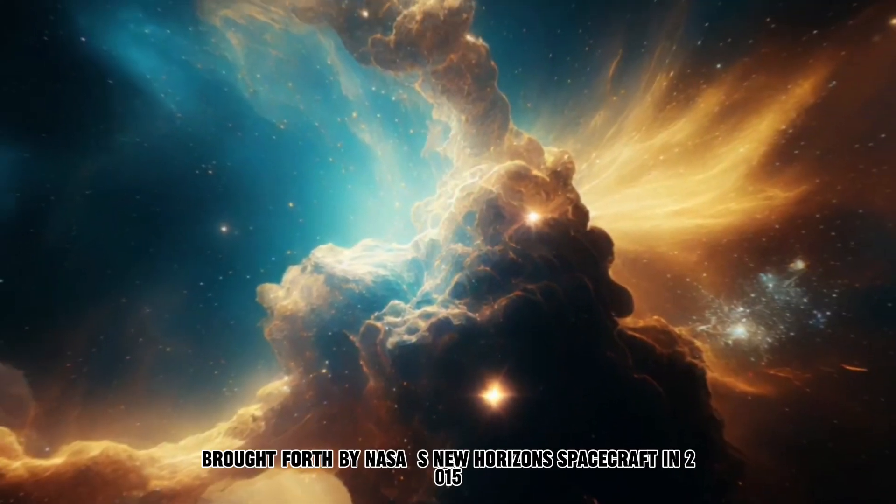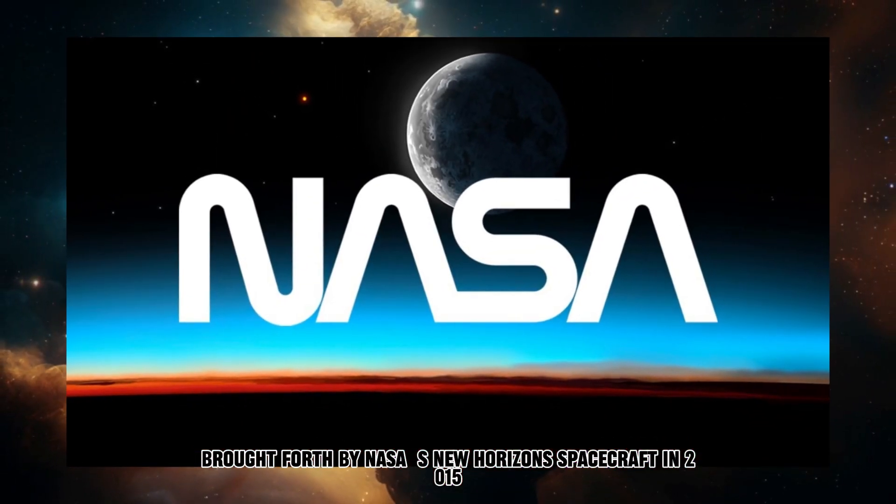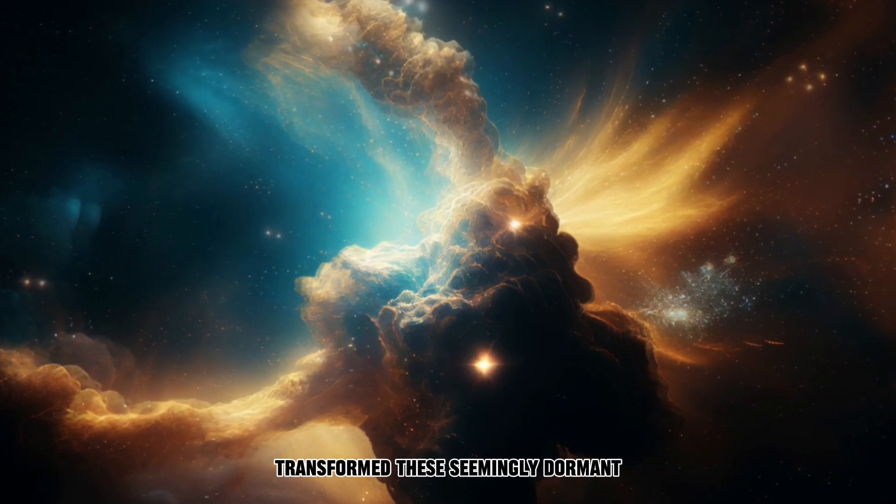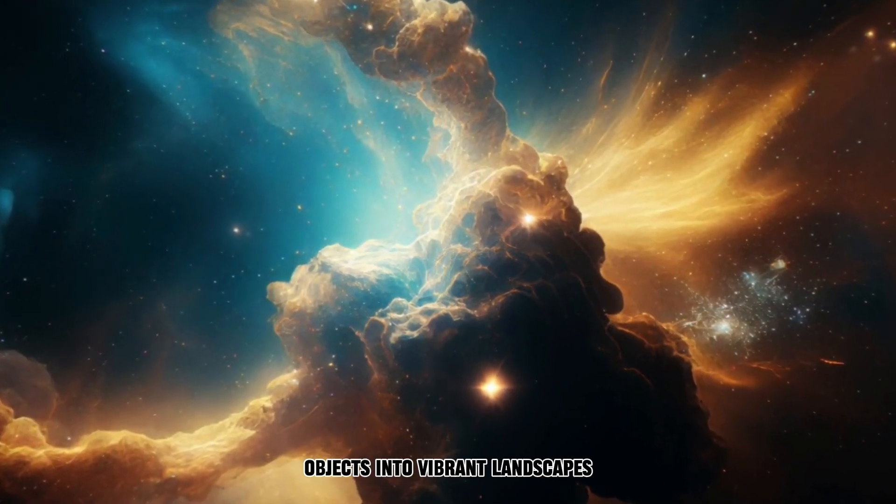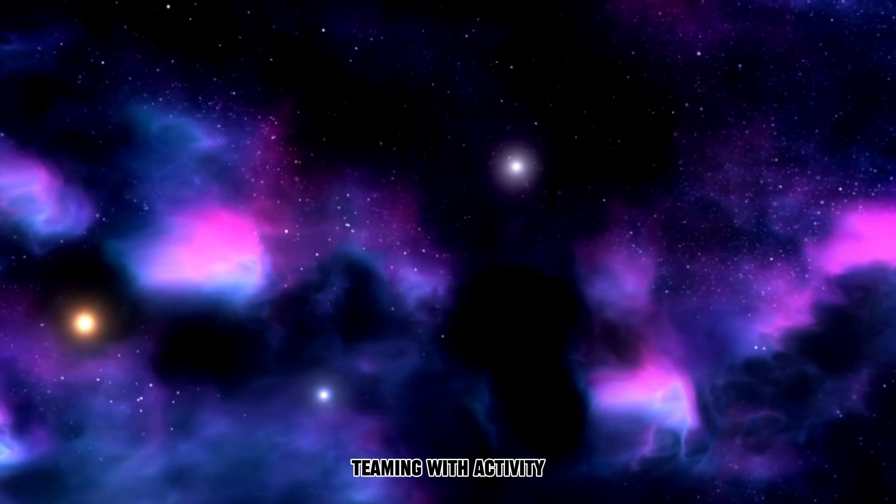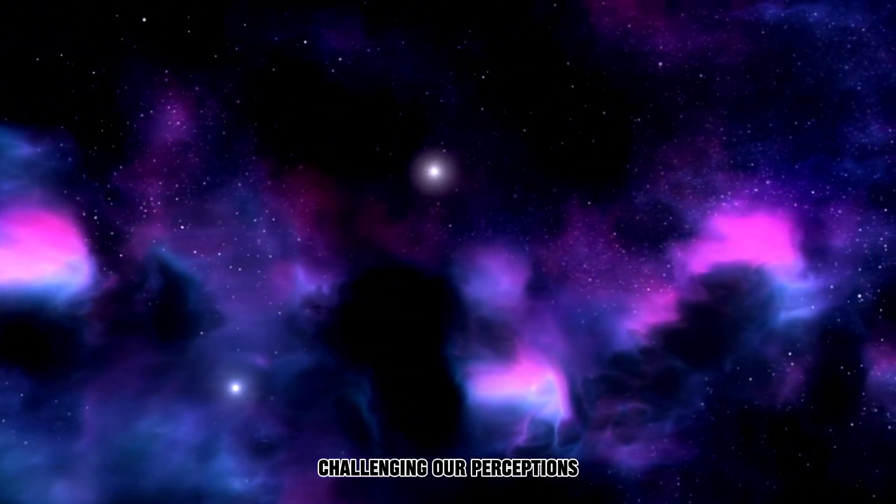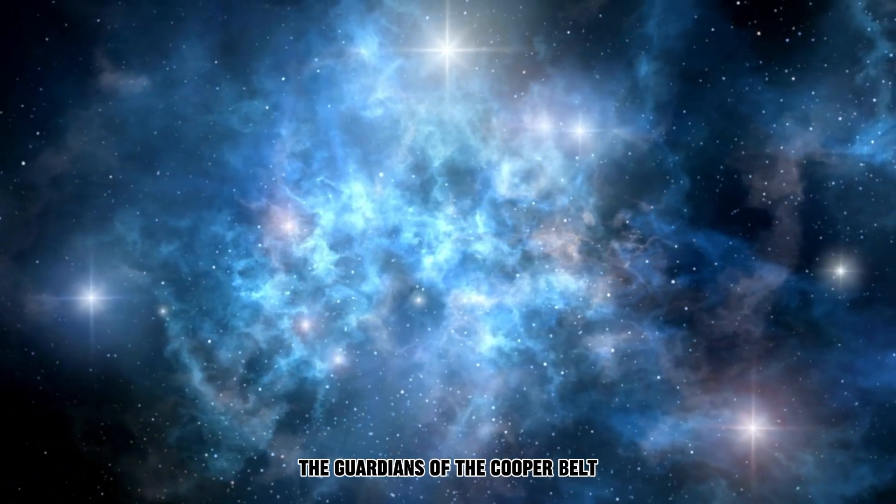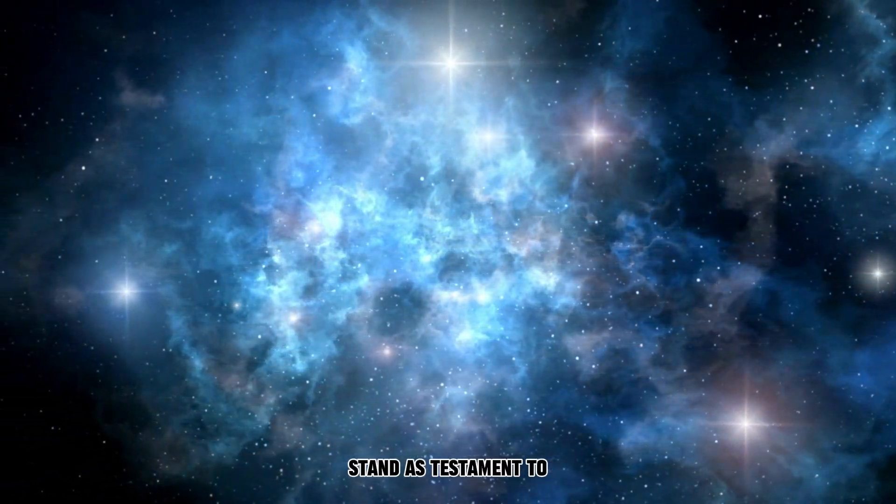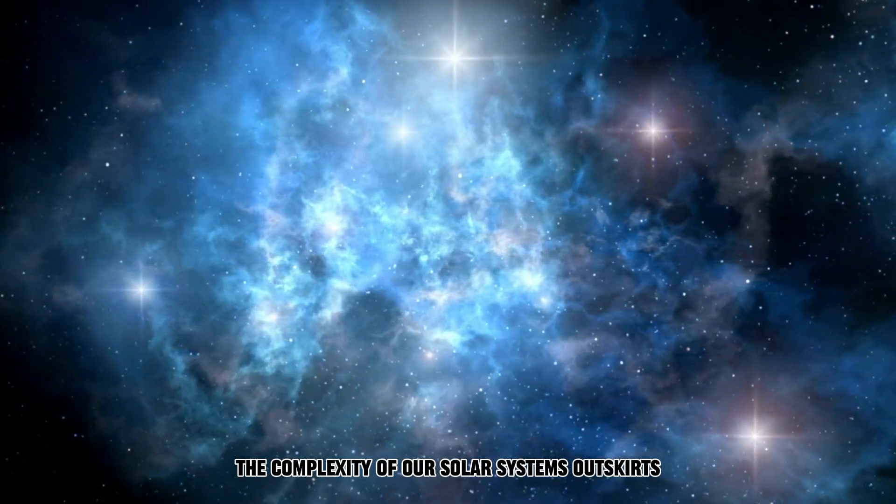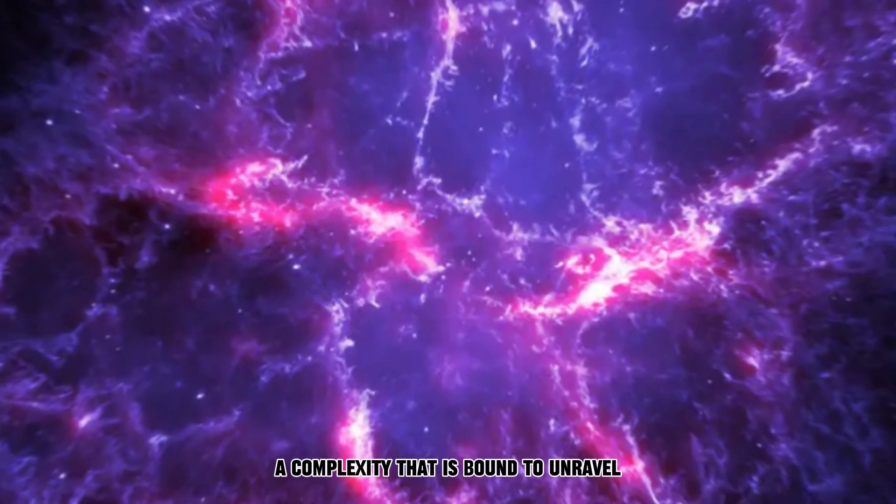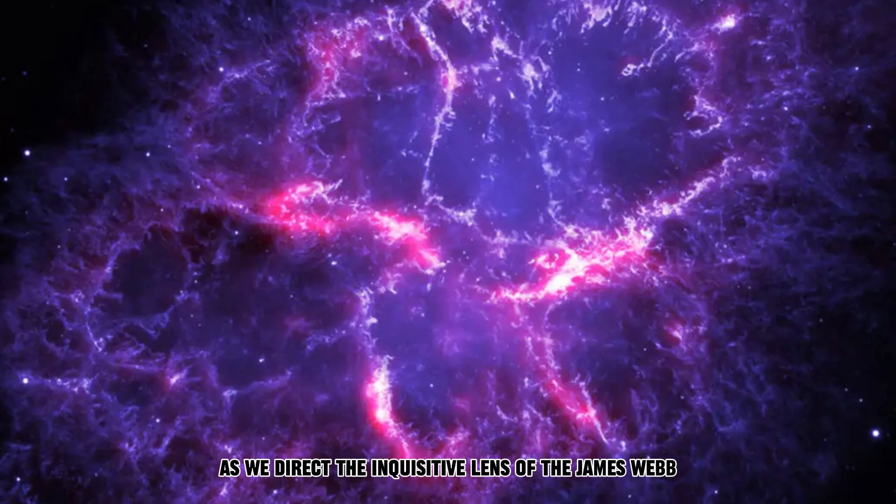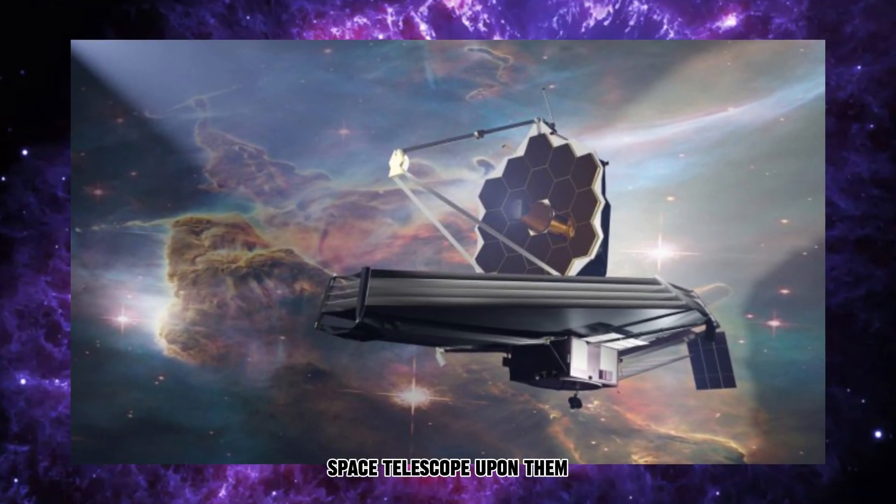The revelations brought forth by NASA's New Horizons spacecraft in 2015 transformed these seemingly dormant objects into vibrant landscapes, teeming with activity, challenging our perceptions and igniting new avenues of inquiry. Pluto and Charon, the guardians of the Kuiper Belt, stand as testament to the complexity of our solar system's outskirts, a complexity that is bound to unravel as we direct the inquisitive lens of the James Webb Space Telescope upon them.